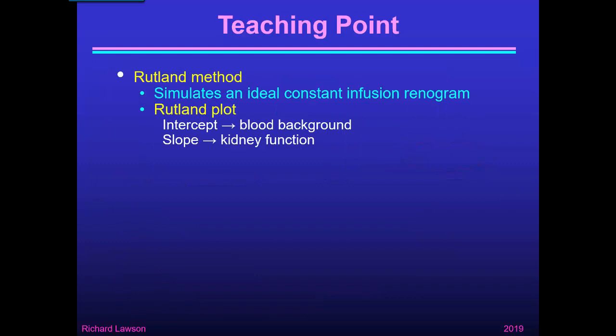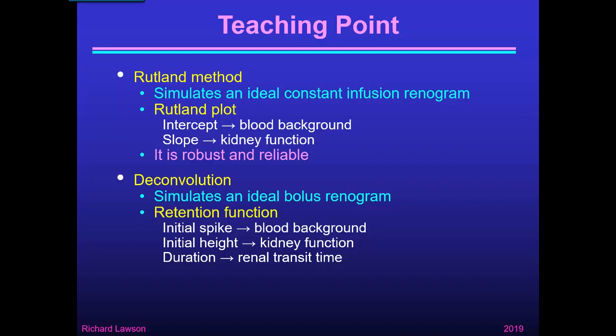So here are two different techniques. The Rutland method takes the real renogram data and distorts it to simulate an ideal constant infusion renogram — the Rutland plot — where the intercept tells us blood background and the slope tells us kidney function. It's robust, reliable, and quite easy to apply. Deconvolution takes the real renogram data and processes it to simulate an ideal bolus renogram — the retention function — where the initial spike is blood background, the initial height is kidney function, and the duration measures renal transit time. Unfortunately, deconvolution is very sensitive to noise and poor quality data, making it much harder to apply. Both techniques require appropriate software on your nuclear medicine computer system.